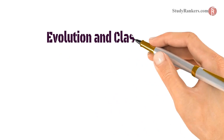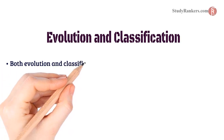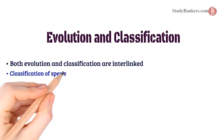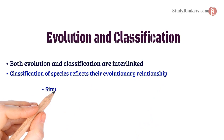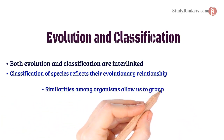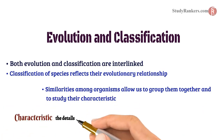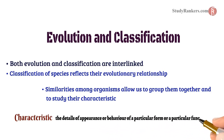Now we are going to study about evolution and classification. Both evolution and classification are interlinked. Classification of species reflects their evolutionary relationship. Similarities among organisms allow us to group them together and to study their characteristics. A characteristic is the details of appearance or behavior of a particular form or a particular function.